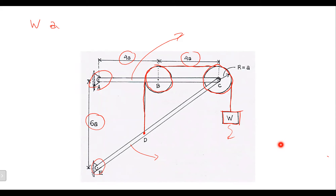The first thing we should draw — the complicated one is at point C. The first thing to draw is the free body diagram to move the force which is happening at the pulley to the joint, to the pin.